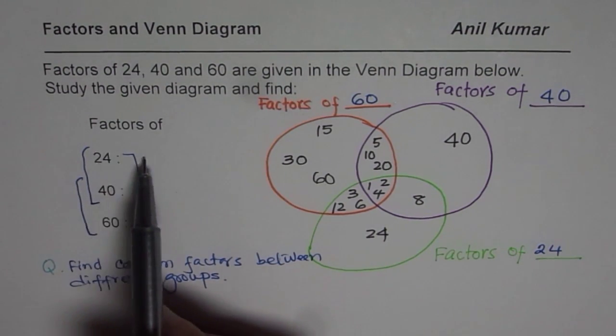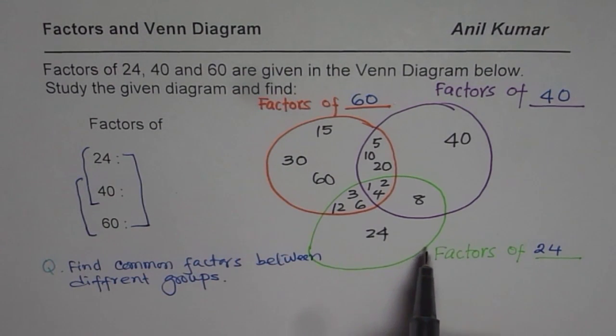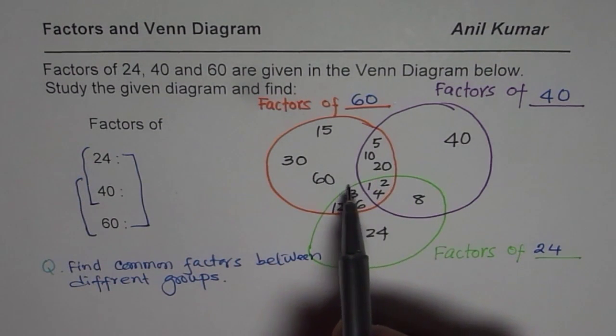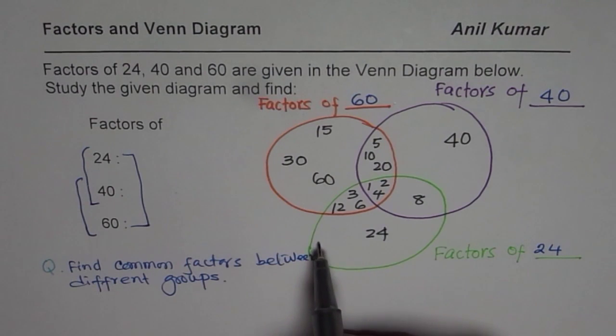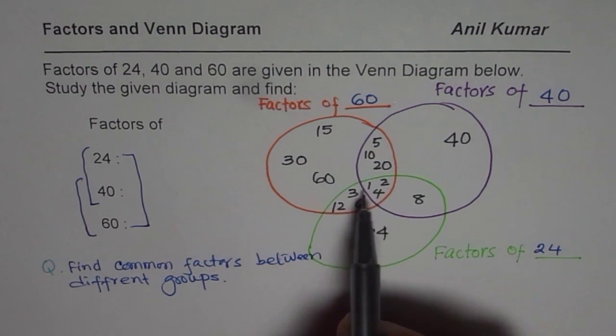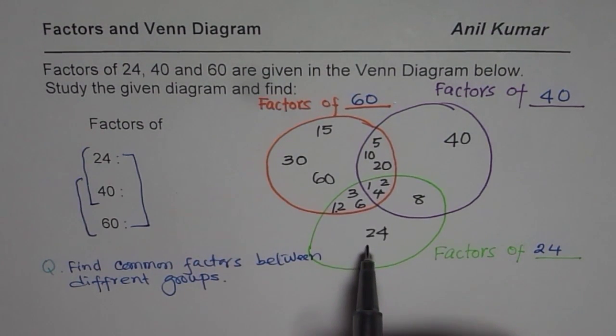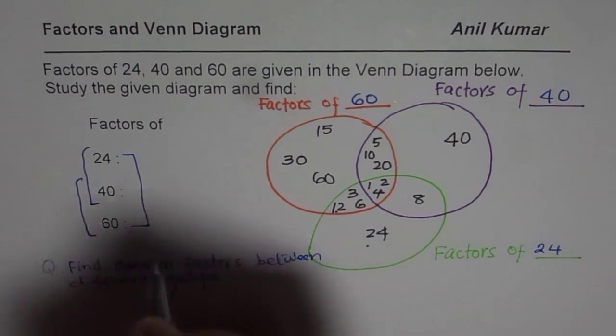Now, let us write down the factors of each. 24. What are the factors of 24? Look into this green circle. If you see numbers within green circle, you get factors of 24: 1, 2, 3, 4, 6, 12, and 24, and 8 also. These are your factors.